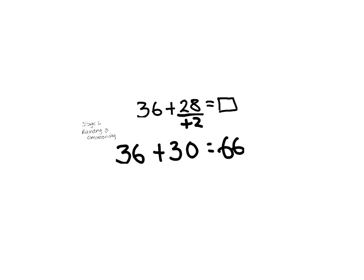After that, we need to subtract the two that we added. So we're taking that off now: 66 minus 2 equals 64.